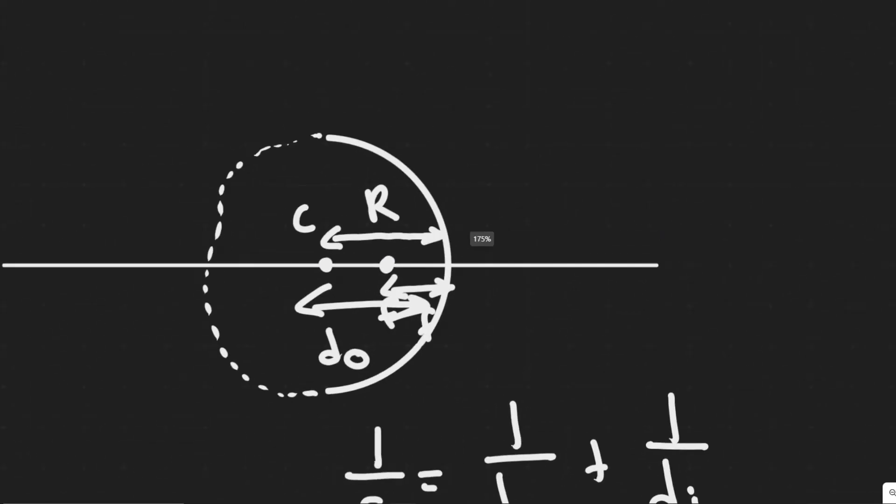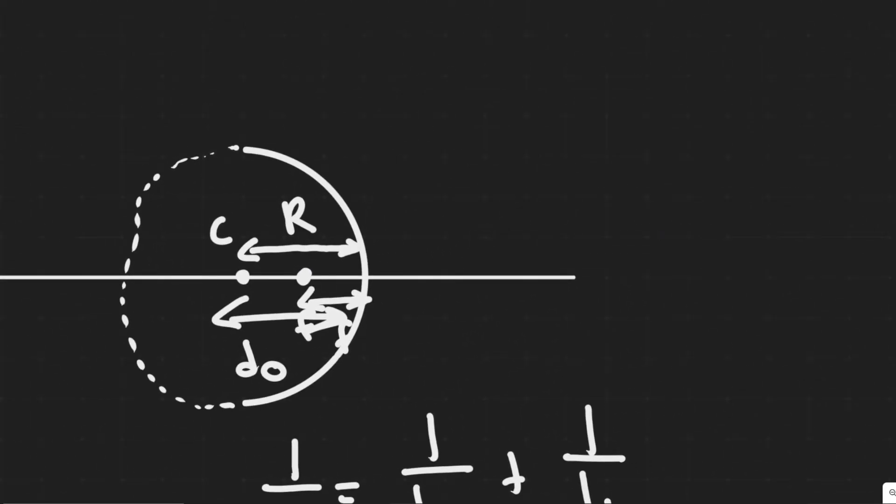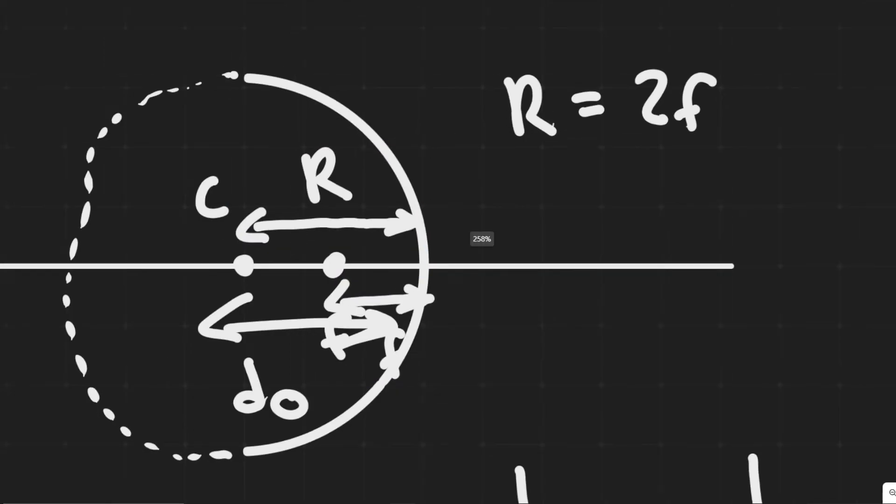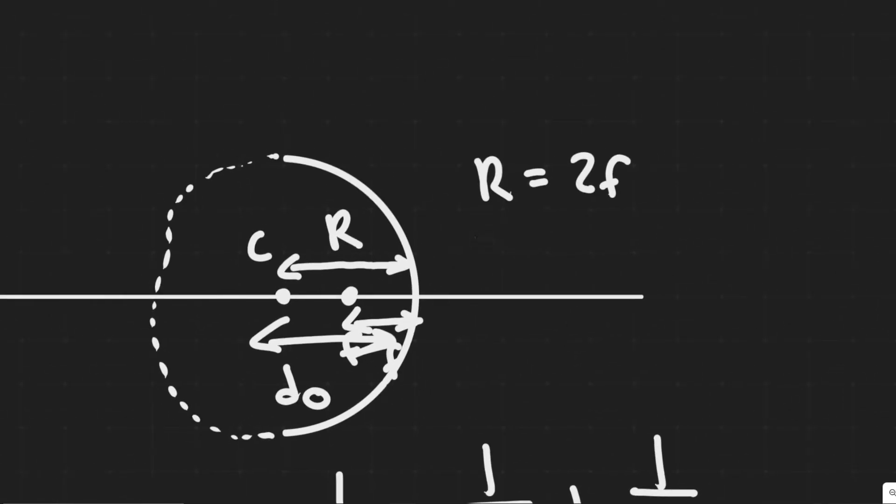If you look at this image, it should be apparent that R is equal to 2 times f, or f is just equal to half the radius. Since we know it's in the middle between C and the mirror, and R is the distance from C to the mirror, f is just half that length.